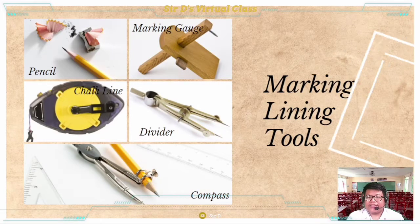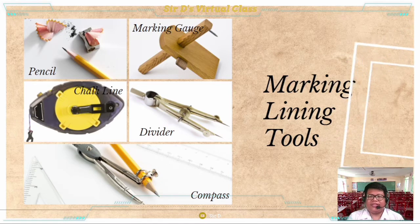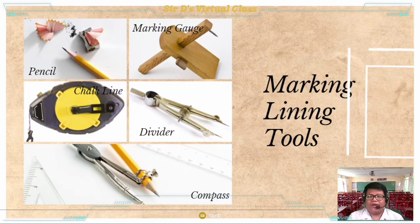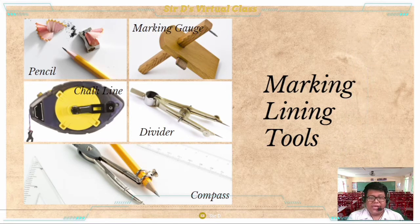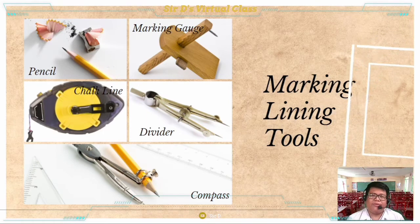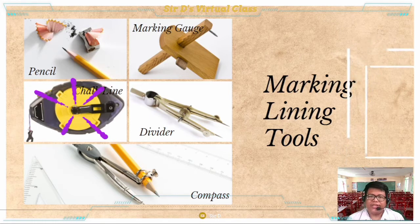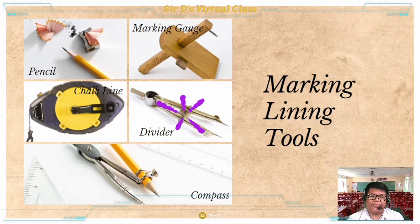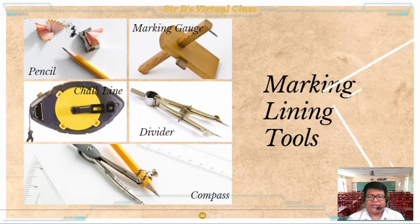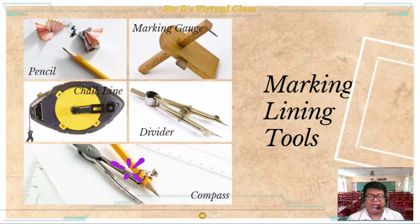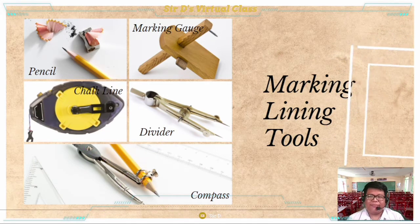The marking and lining tools group includes five distinct tools. The pencil is used to mark or lay out lines. The marking gauge, a wood or metal tool consisting of a beam, head, and point, is used to mark a line parallel to the grain of the wood. The chalk line is used to establish a straight line on a surface. The divider, a tool with two metal legs, is used to lay out an arc, circle, or division of a line. And lastly, the compass is used to scribe arcs and circles in metal or wood.